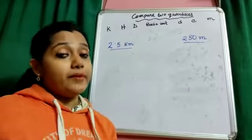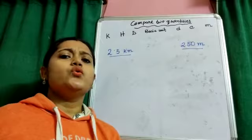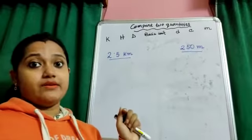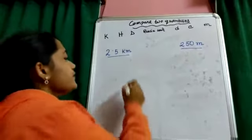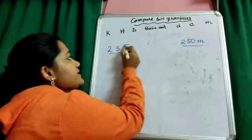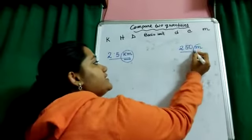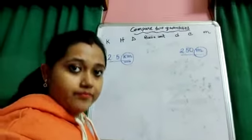Whenever we compare two quantities, we should be very careful about the units given. In the first quantity, the unit is given as kilometer and in the second quantity, the unit is given as meter.